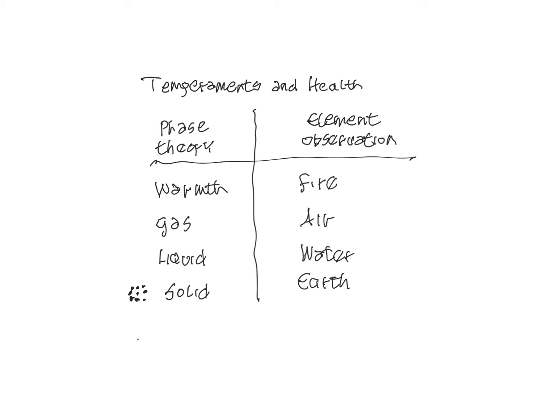If warmth is applied to a solid, the atoms that make up the solid are given a degree of freedom and they begin to move, forming wave patterns — that is then known as the liquid. Still more warmth causes the liquid to expand to the degree that particles separate with a lot of space in between, and that's the gas. And if even more warmth is applied, we reach a state where particles are so dispersed — that is theoretically the warmth state.